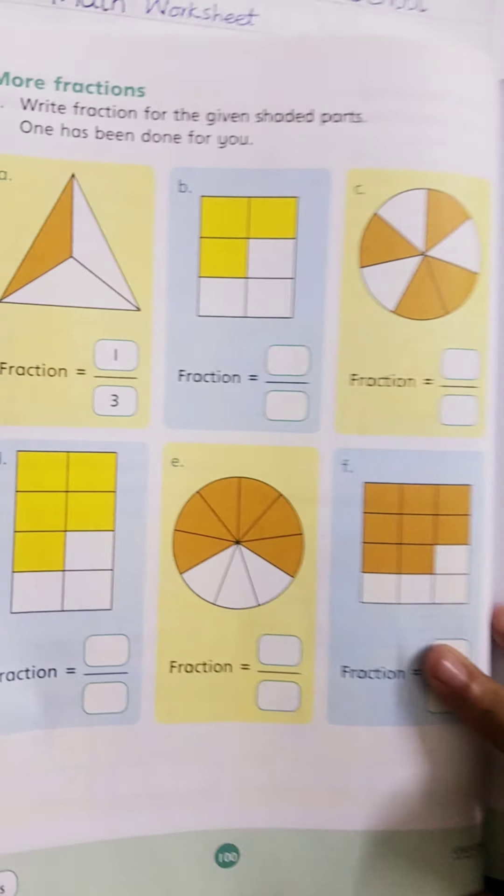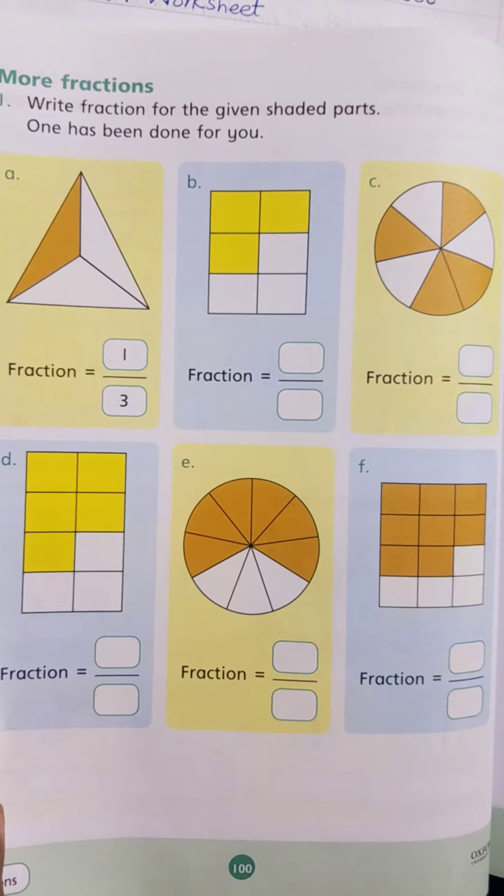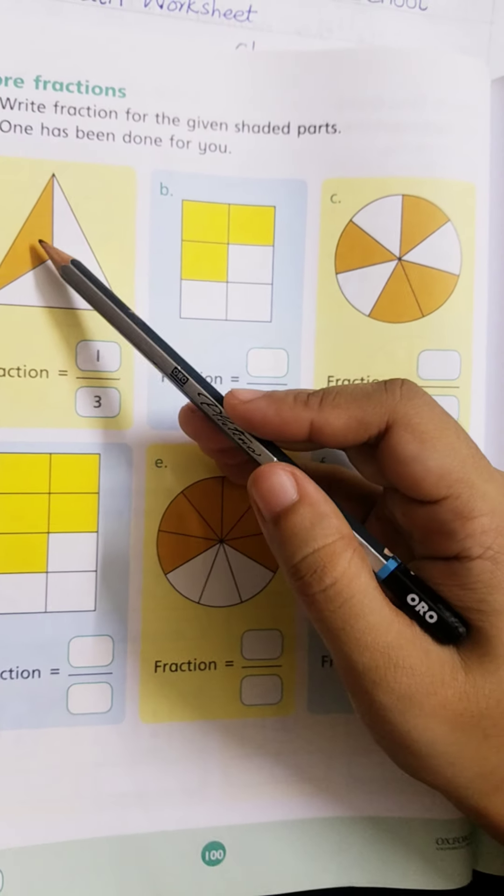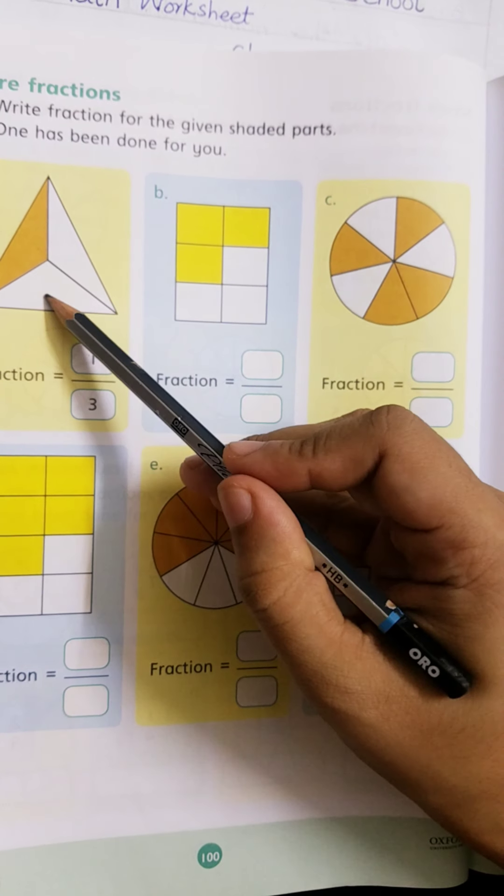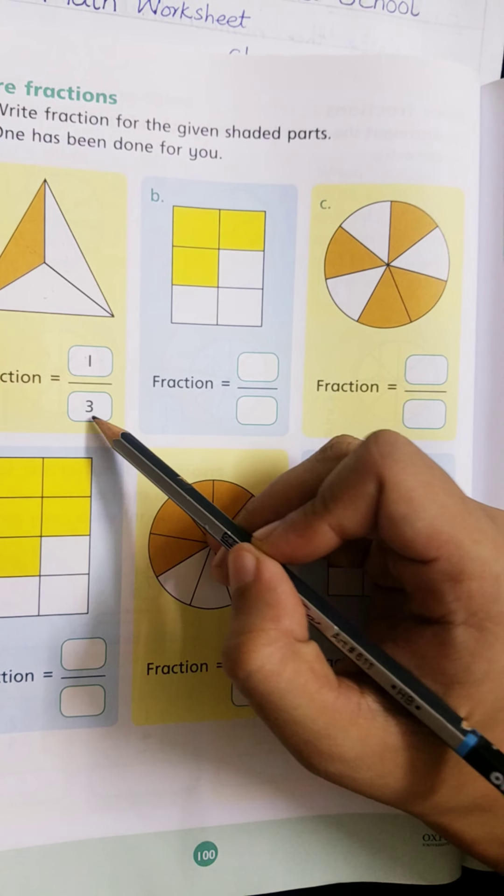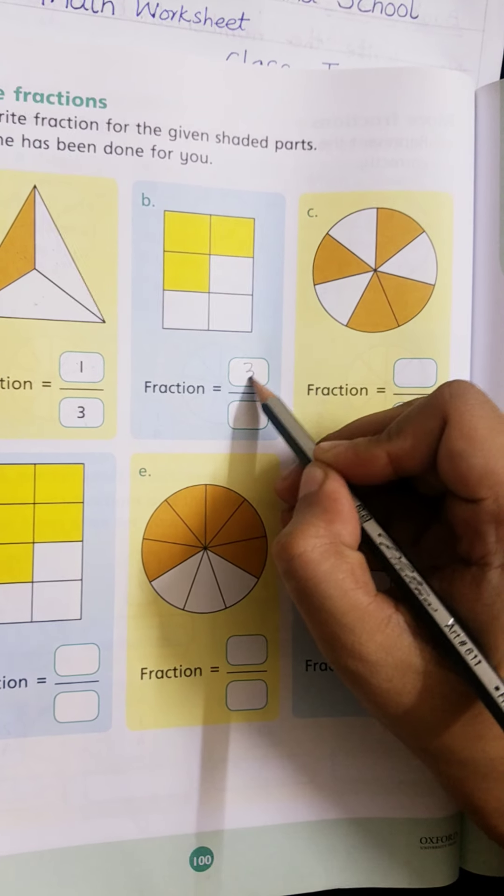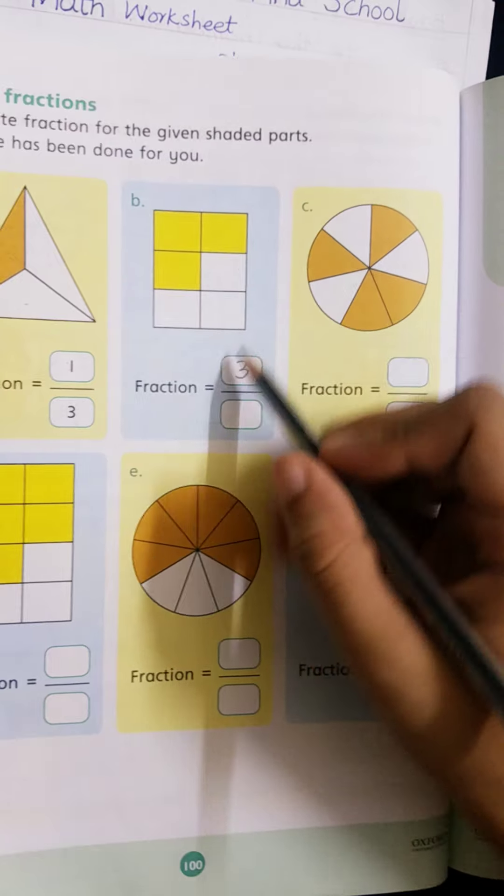Page number 100. Write fractions for given shaded parts according to your fractions. 1 is colored, and the total number of parts are 3. 1, 2, 3. Write downward, use to write. 2 is colored, 3 we will write. Fractions down, 6.